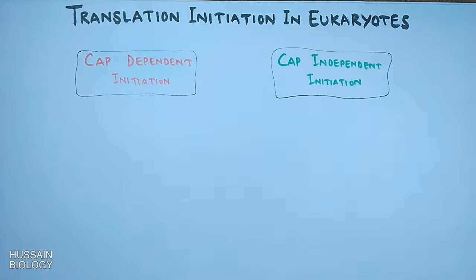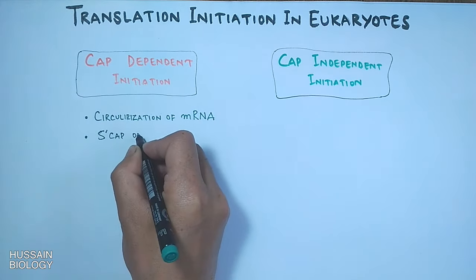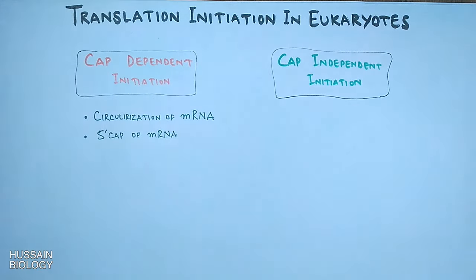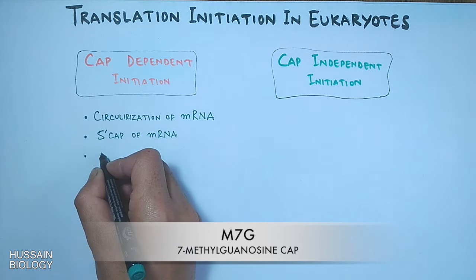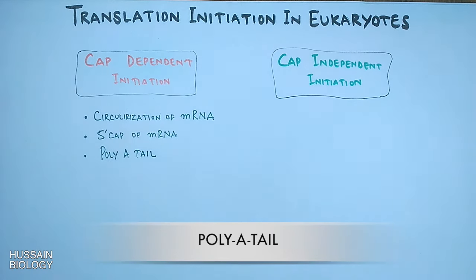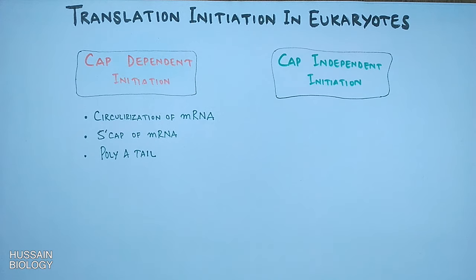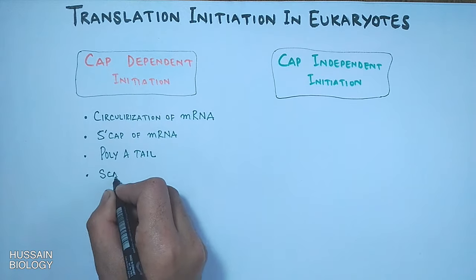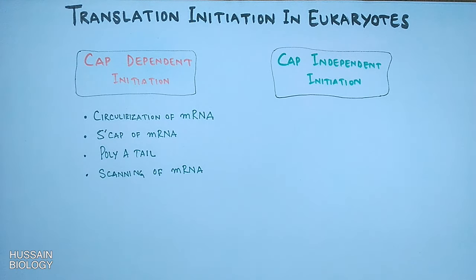In cap-dependent initiation there is circularization of mRNA. The 5' cap of mRNA — the 7-methylguanosine cap — is involved in the initiation process. There is also involvement of the poly-A tail of mRNA, which takes part in translation initiation. Additionally, in cap-dependent initiation there is scanning of the mRNA molecule to locate the initiation codon, AUG.